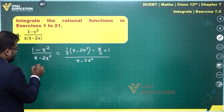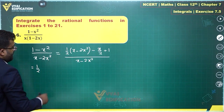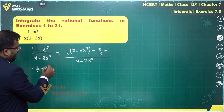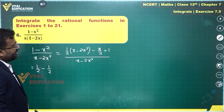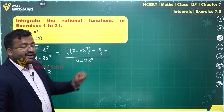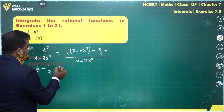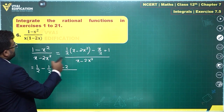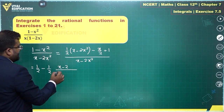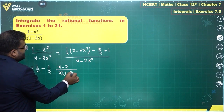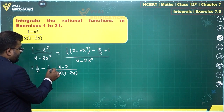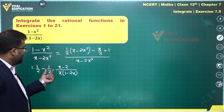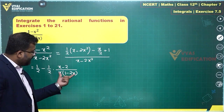Dividing this, the 1/2 separates out. Taking minus common and minus 1/2 common, this makes x minus 2 in the numerator. In the denominator we have x minus 2x square, which factors as x times 1 minus 2x. The integral of 1/2 is straightforward; we now need to find the integral of the remaining expression.